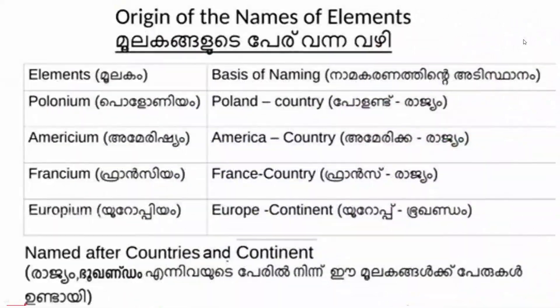The two chapters are: the origin of the name of elements, and the three chapters are the origin of the name of elements.